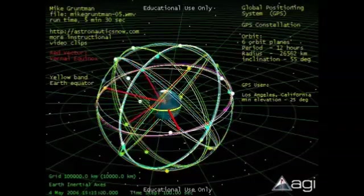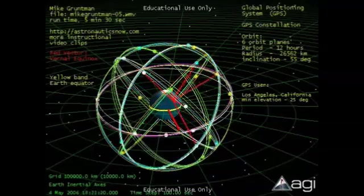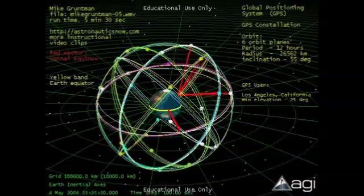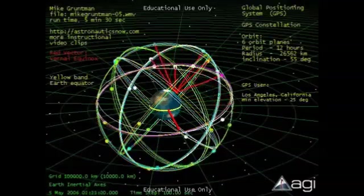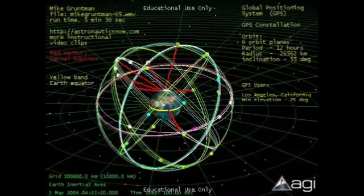We illustrate the visibility of satellites for a GPS user in Los Angeles, California. Red lines show when the satellites are in direct view. In this hour example, we require the minimal elevation angle of satellites to be higher than 25 degrees.